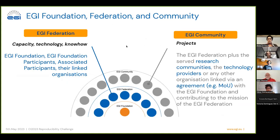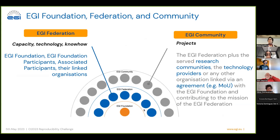A bit of terminology here. EGI Foundation is a non-profit legal entity based in Amsterdam in the Netherlands, and it is the coordinating body for the EGI Federation. The Federation consists of infrastructure providers, service providers, and technology providers, all working together to serve a community of users. We say: we are the EGI Foundation, but together with the providers we are the Federation, and together with the users we are all the EGI community.